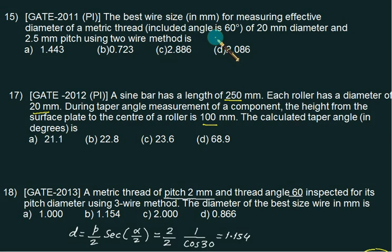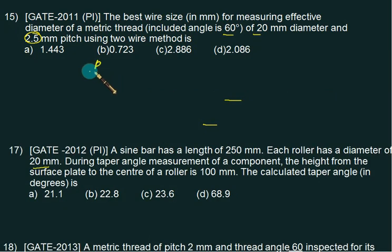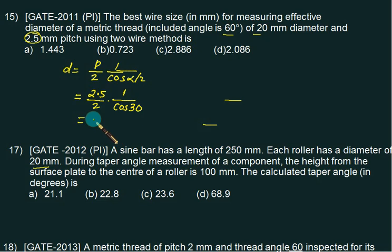In this GATE 2011 question, find the best wire size in mm for measuring effective diameter of a metric thread with included angle 60°, 20 mm diameter, and 2.5 mm pitch. We need pitch and angle. Best wire diameter = P/2 × sec(α/2), so 2.5/2 × 1/cos(60/2) = 2.5/2 × 1/cos(30). The answer is 1.443, choice A is correct.